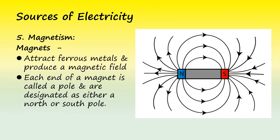Magnets are our fifth source of electrical generation. Since it is such an important part of electrical production, we will spend a little more time discussing them. Magnets attract ferrous metals, what we commonly think of as iron, and includes most forms of steel. They each have a north and south pole, much like the planet Earth, which acts like a large magnet with lines of magnetic flux moving from the north to the south pole.